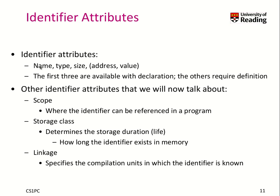With the declaration, the compiler knows something about the name, type, and size. But the address and the value are only known when we talk about the definition — particularly the value. Sometimes even with the definition, a value may not yet be assigned if we're talking about a local variable.